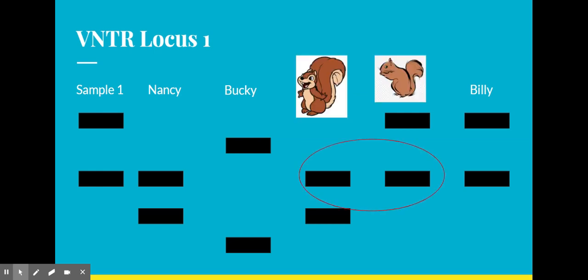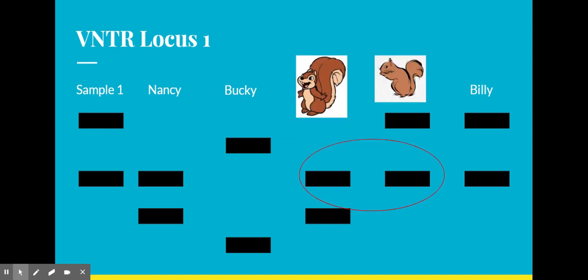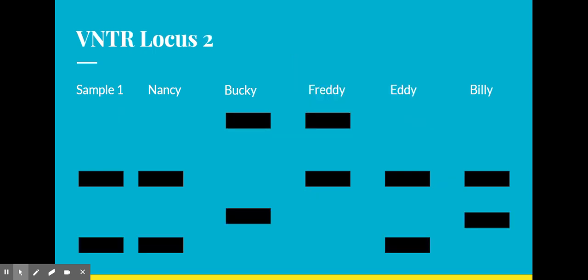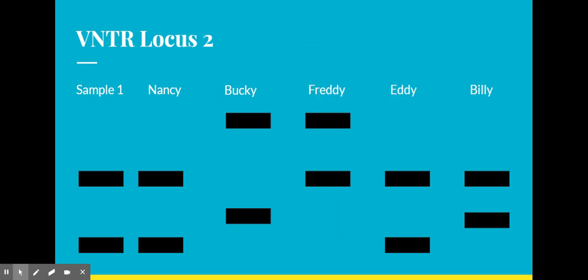One final thing is we can see that Freddie and Eddie share one allele due to Eddie being Freddie's father. Moving on to the second locus, we can see yet again that Freddie and Eddie are sharing a locus due to their familial link and inheritance.